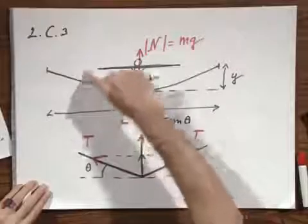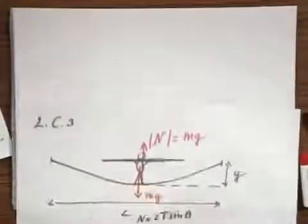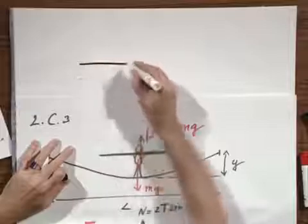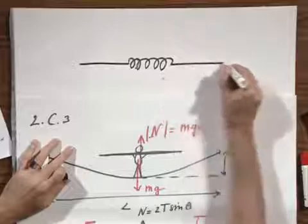Suppose I cut here this rope. And at the location of the cut, I put in a spring. So here would be then the rope, and here would be the spring, and here would be the rope.